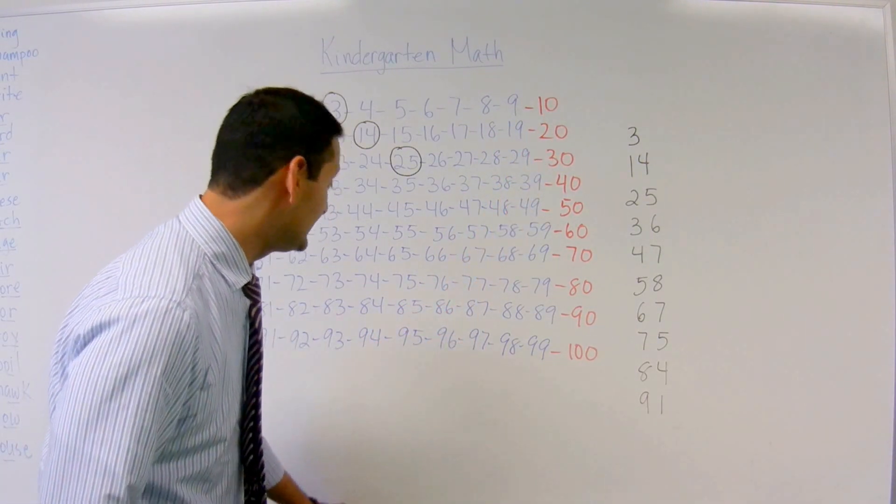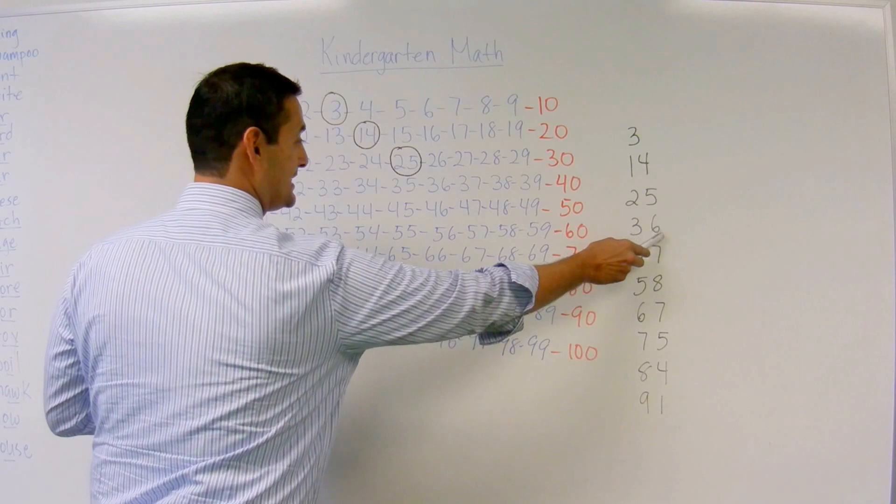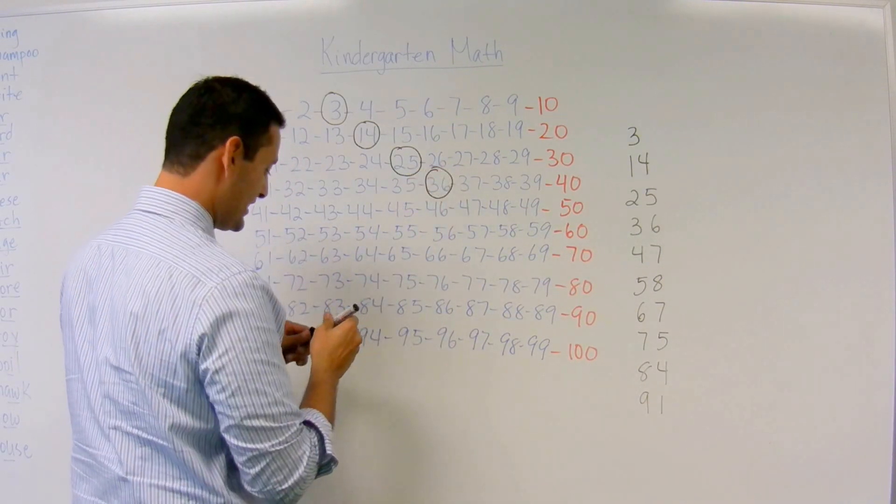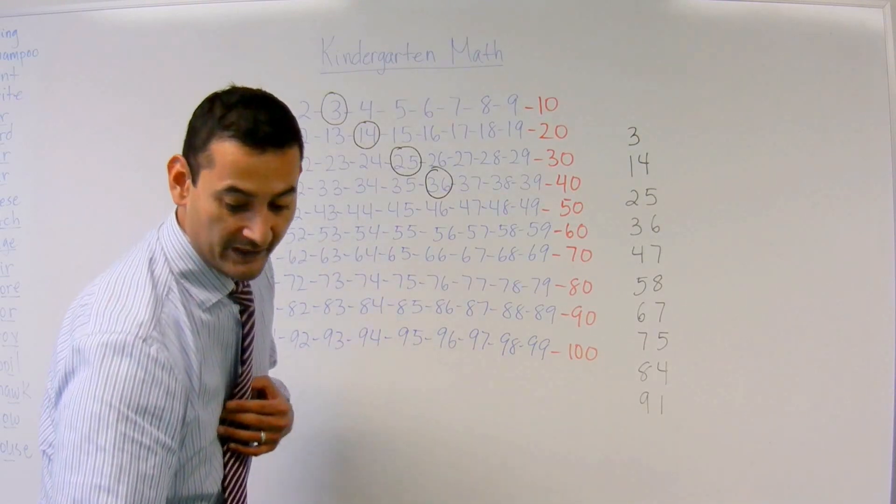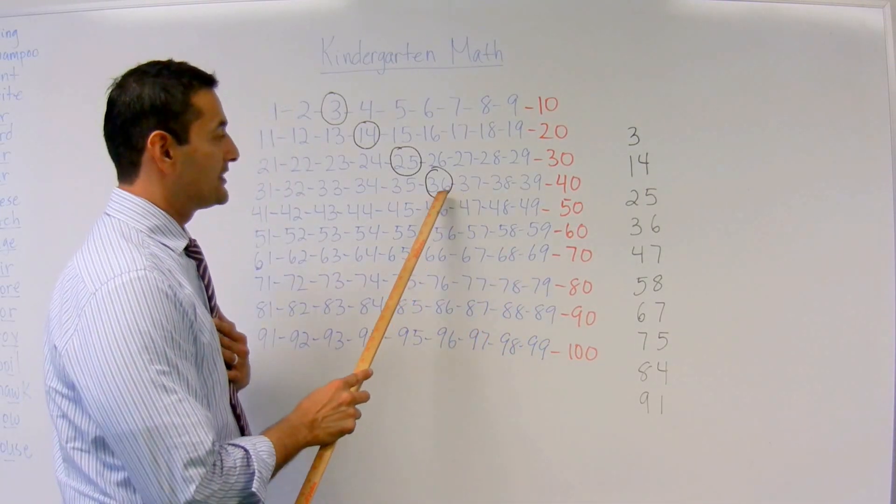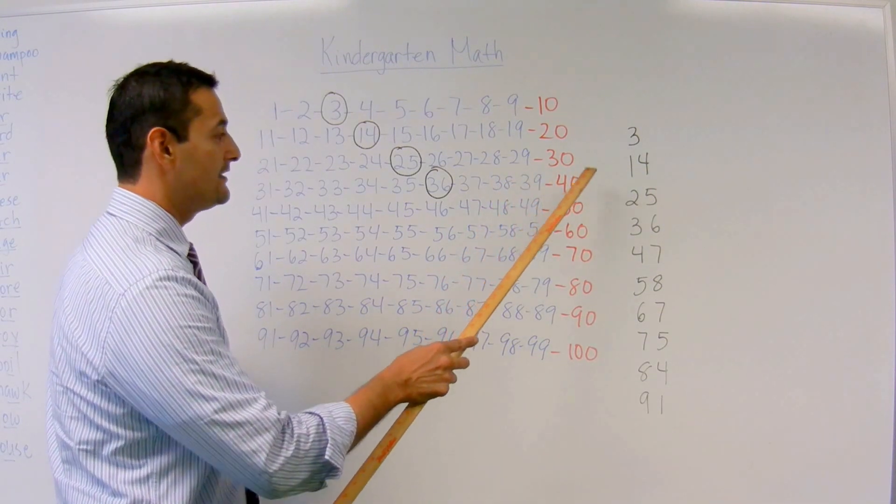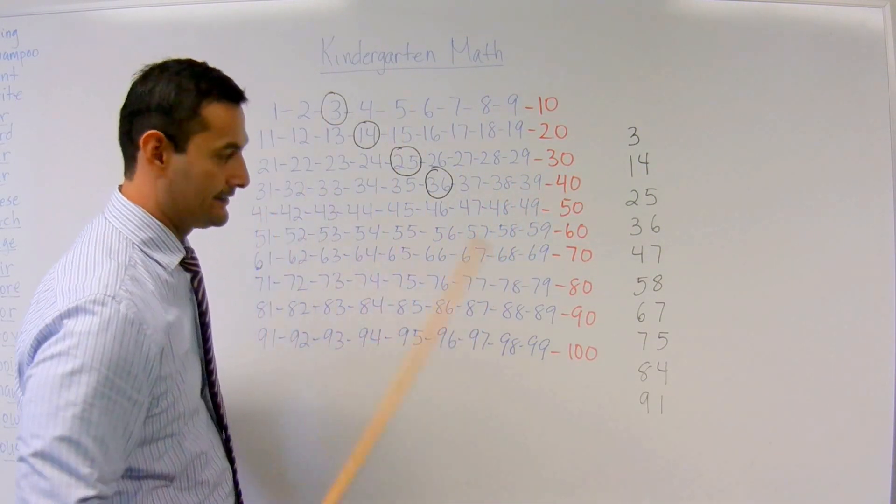Now let's take a look at this number here, 36. I'm going to circle 36, and we're going to count up. So let's go ahead and let's do that. 36, 37, 38, 39, 40, 41. Awesome.